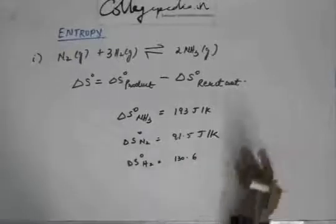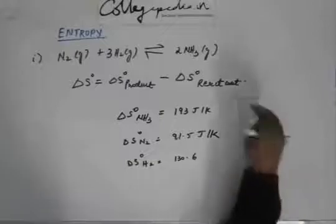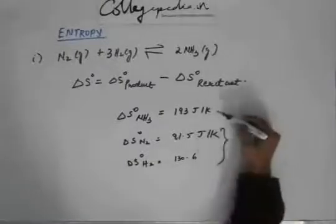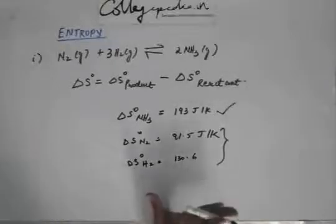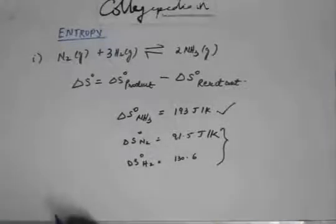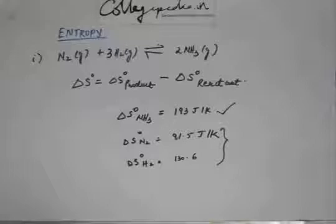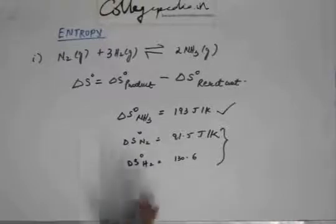Then, you don't have to do anything to find the delta S of reactant, you just have to add these two and delta S of product is this. So, when you subtract it, you will get the value of delta S of reaction. This is very simple, it is very trivial. It is just like feeding the data and getting the answer.